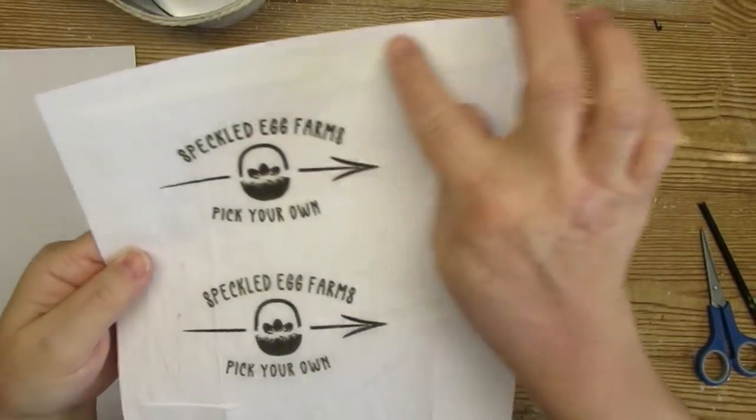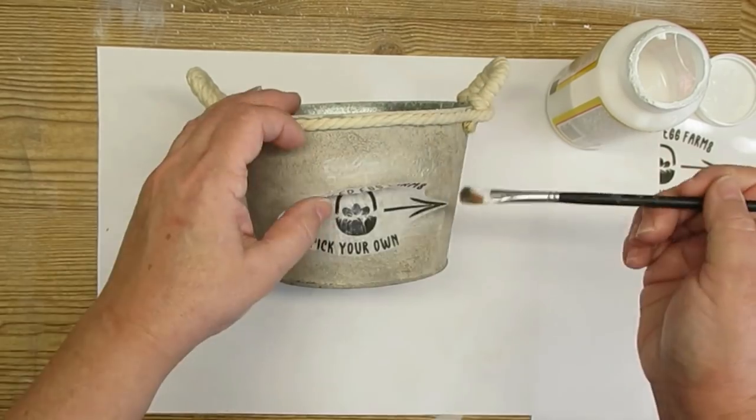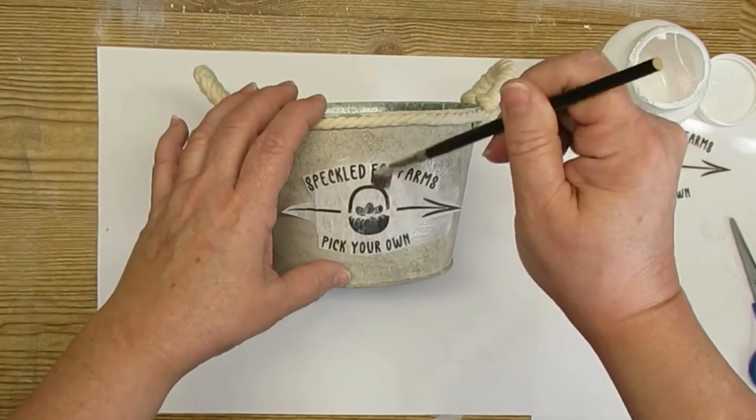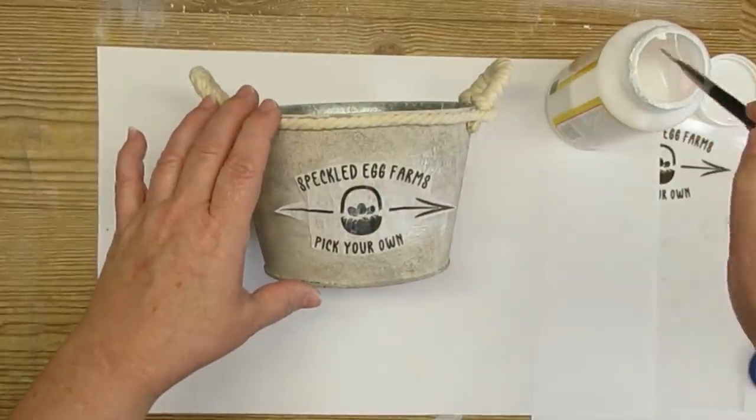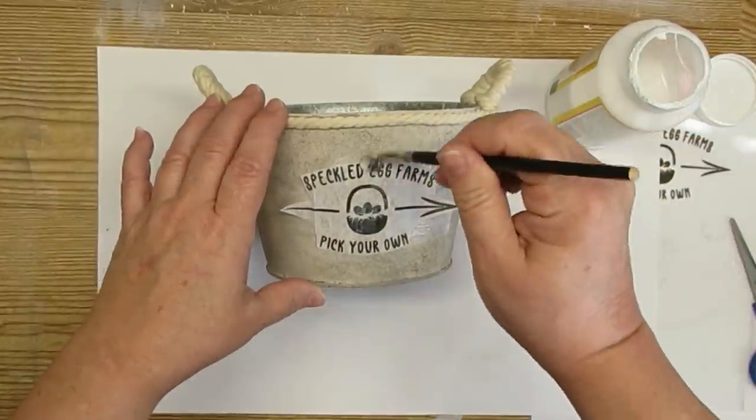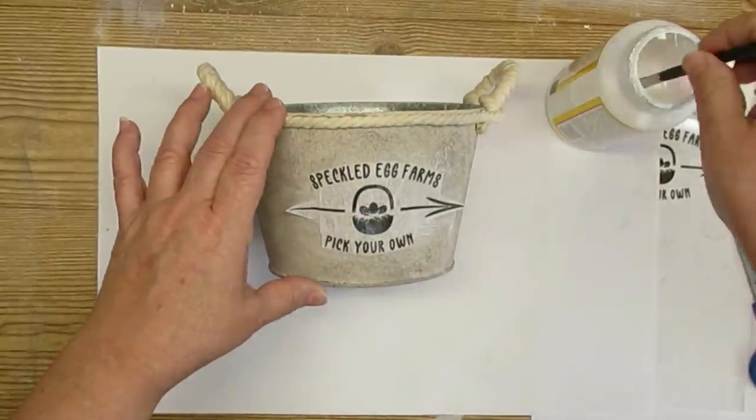I'm using the tissue paper method again for printing this little design that I created in Cricut Design Space. I'm going to go ahead and add it the same way I did the other one using some Mod Podge and then just very gently making sure that I use a brush to smooth it all out.